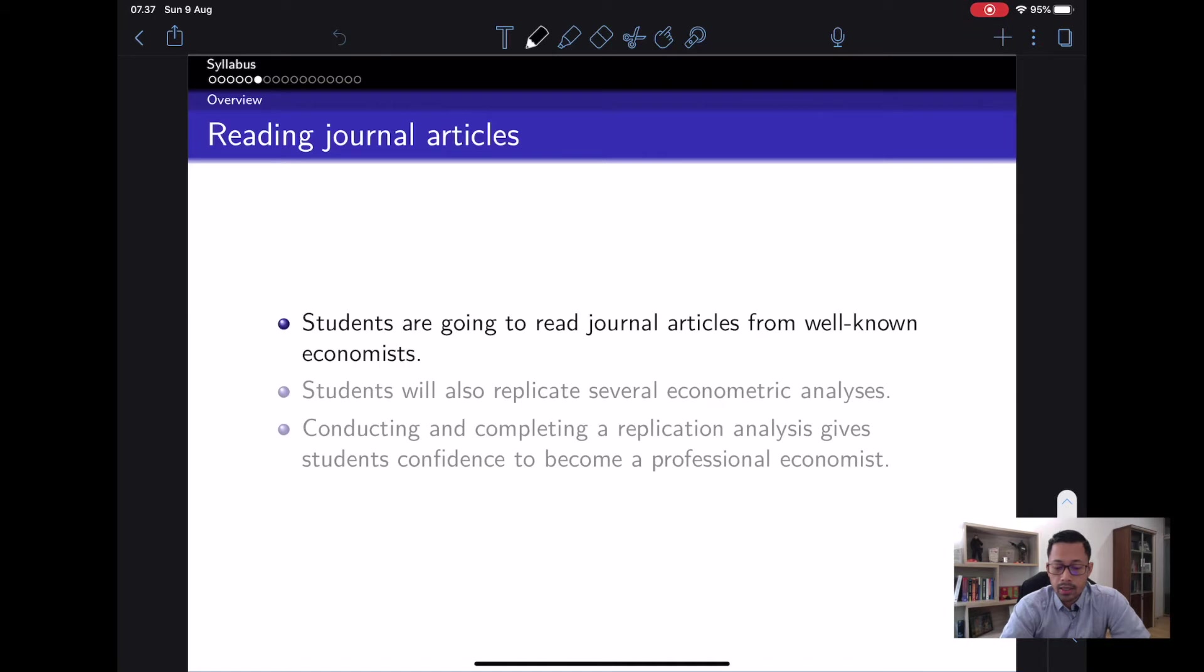Reading journal articles is also required. You're going to read journal articles from well-known economists, and students will replicate several econometric analyses. Articles published in top journals will provide data, and we're going to require students to do replication of this data. Conducting and completing replication analysis gives you confidence to become a professional economist.